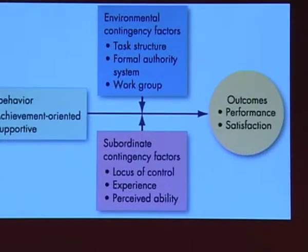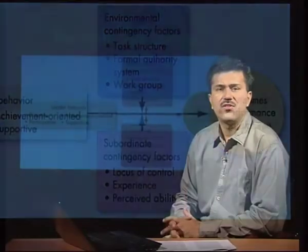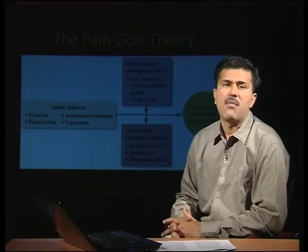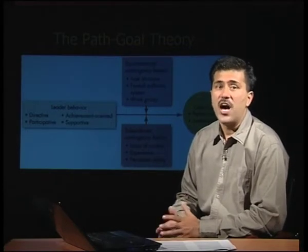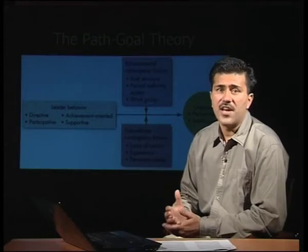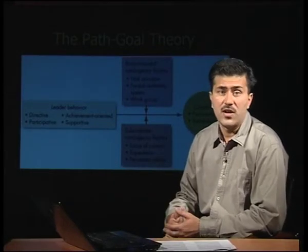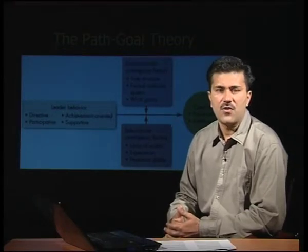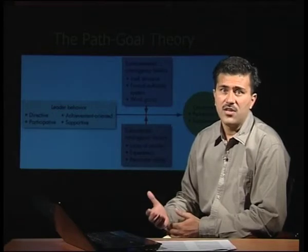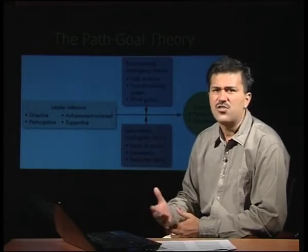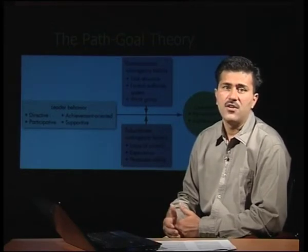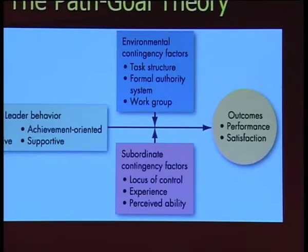Second are subordinate contingency factors. The first is locus of control — the degree to which I believe I am master of my own fate. Locus of control can be bifurcated into internals (I have framed my destiny through my own efforts) and externals (who always blame external circumstances behind their failure). Your locus of control creates an impact on your satisfaction and performance.